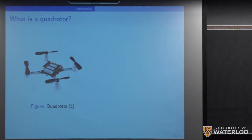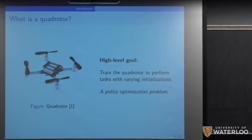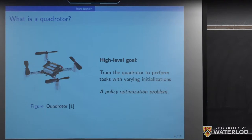What is a quadrotor? Here's a picture of one. It's basically a helicopter that, given by the name, has four rotors, each with propellers that have at least two blades. The high-level goal is to train the quadrotor to perform different tasks with varying initializations. In general, we can consider this a policy optimization problem — we want to learn the optimal policy to perform certain tasks.